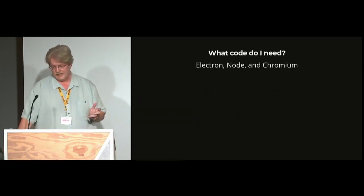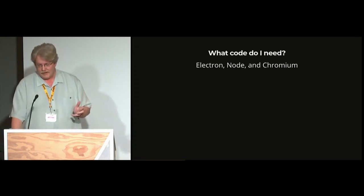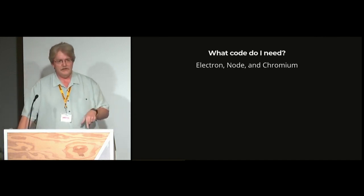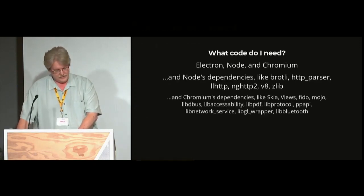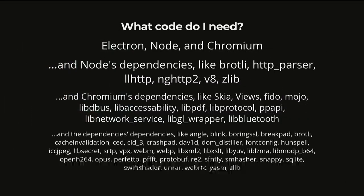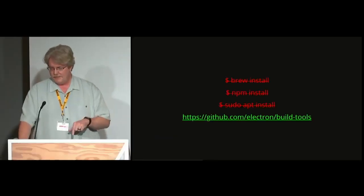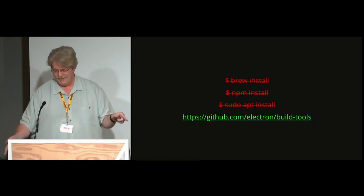If any of that sounded interesting, the next thing to do is to get the code. Electron is Node plus Chromium plus features, and we compile all those sources together to ensure compatibility — same compiler flags, and Chromium and Node need to use the same version of V8. Node has dependencies, Chromium has dependencies, and Chromium's dependencies have dependencies. When you add everything up, it's about 60 million lines of code.